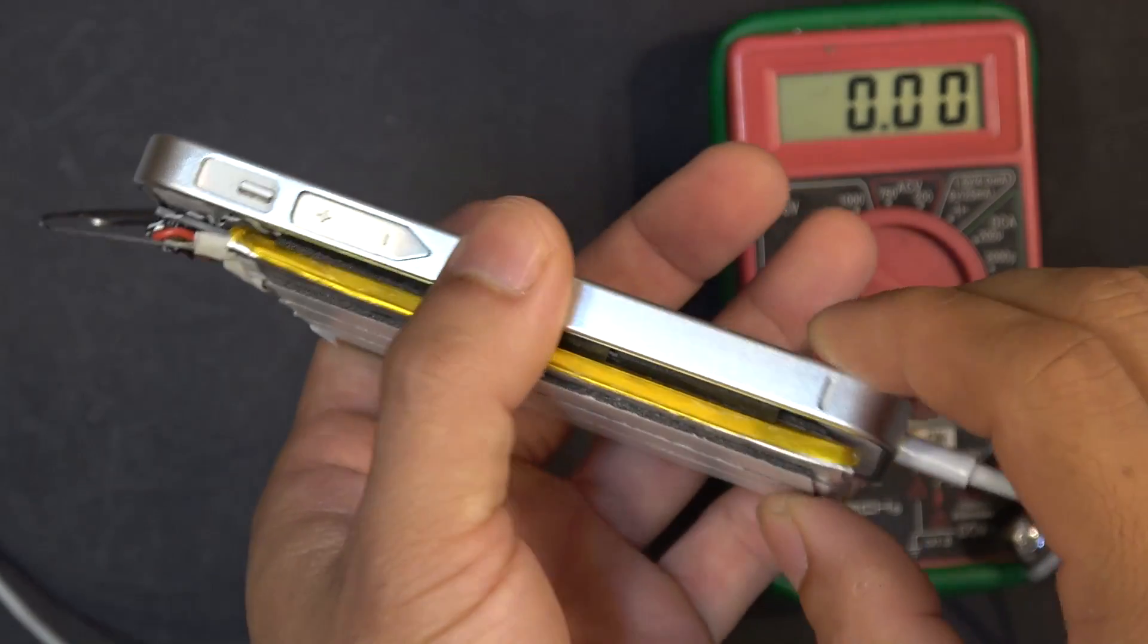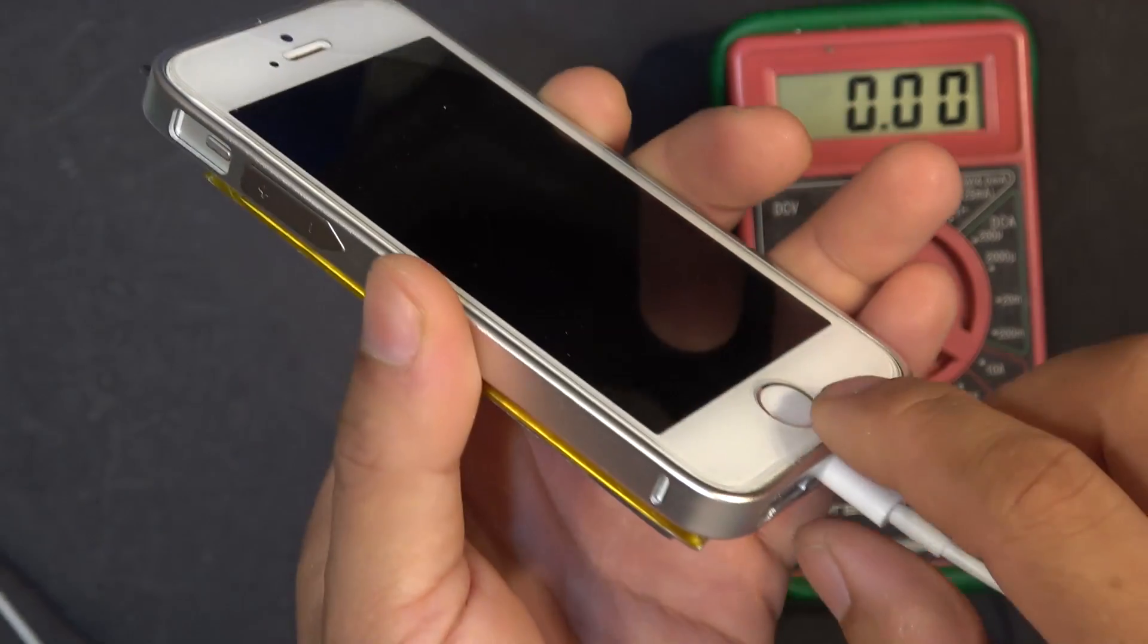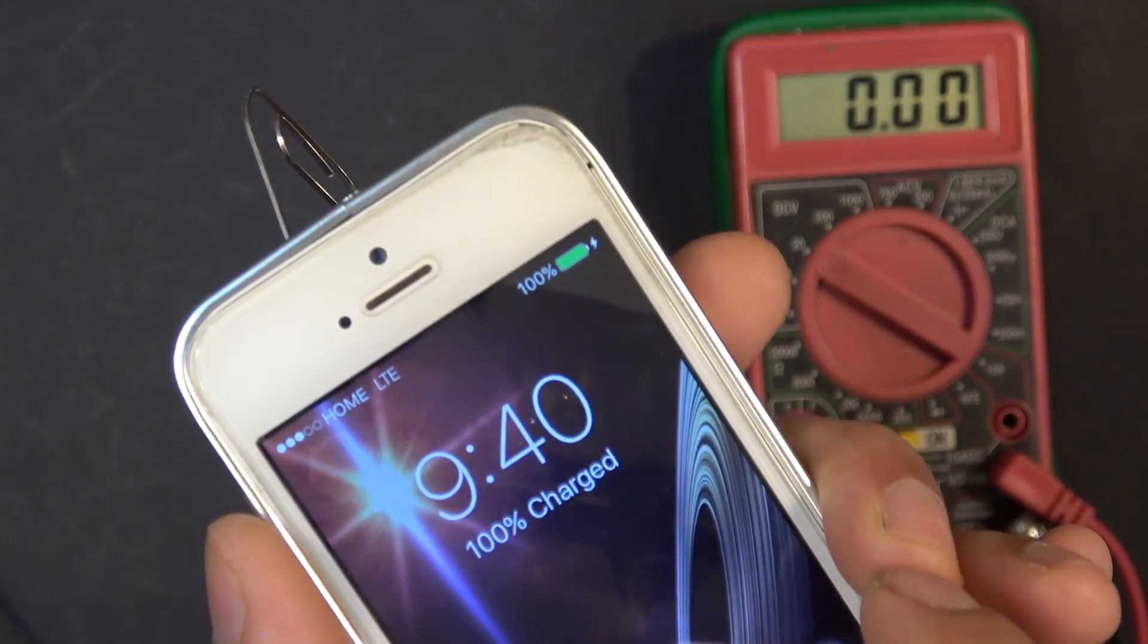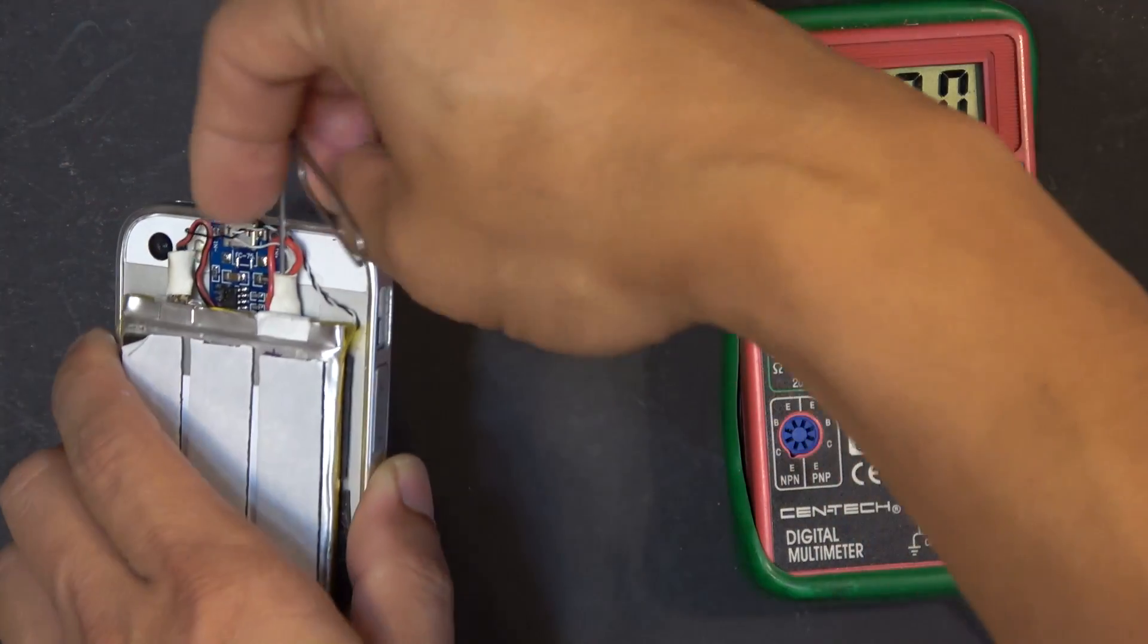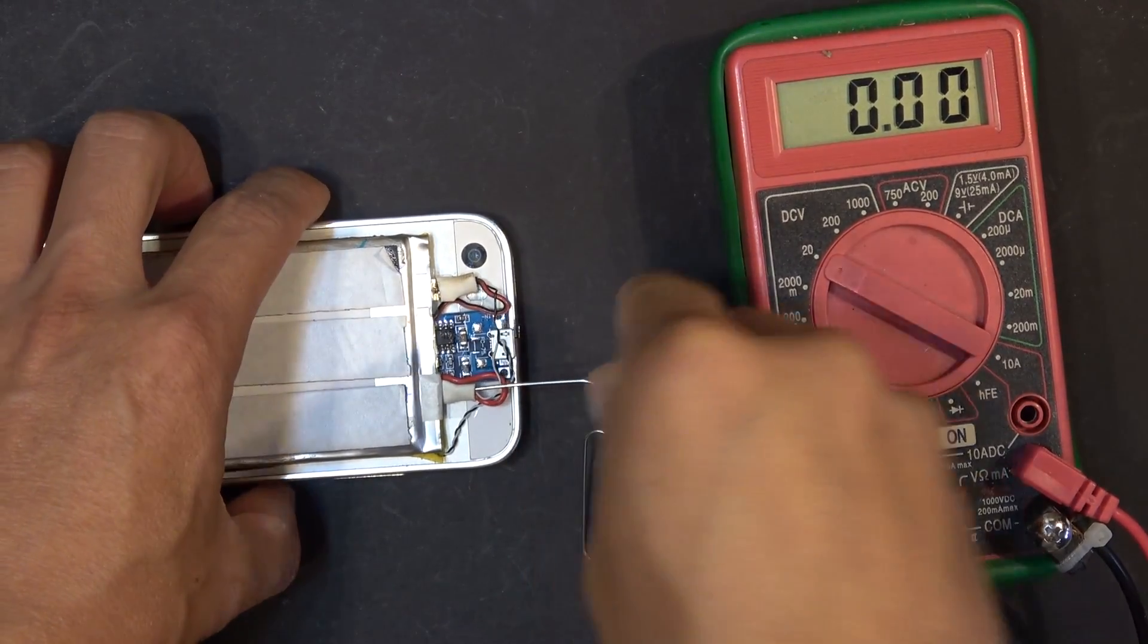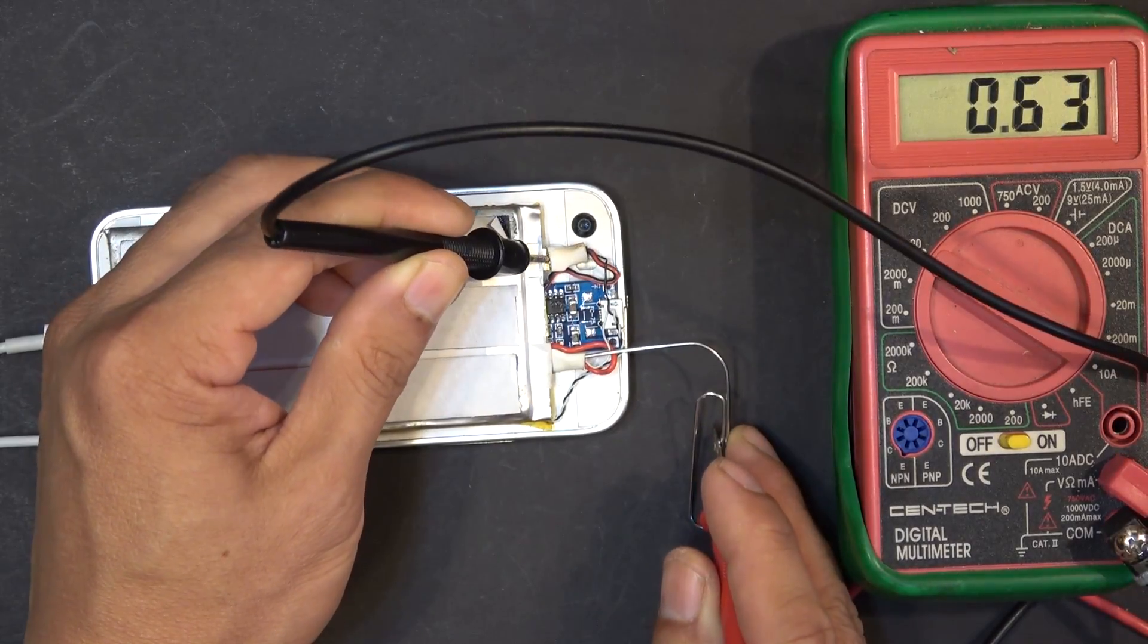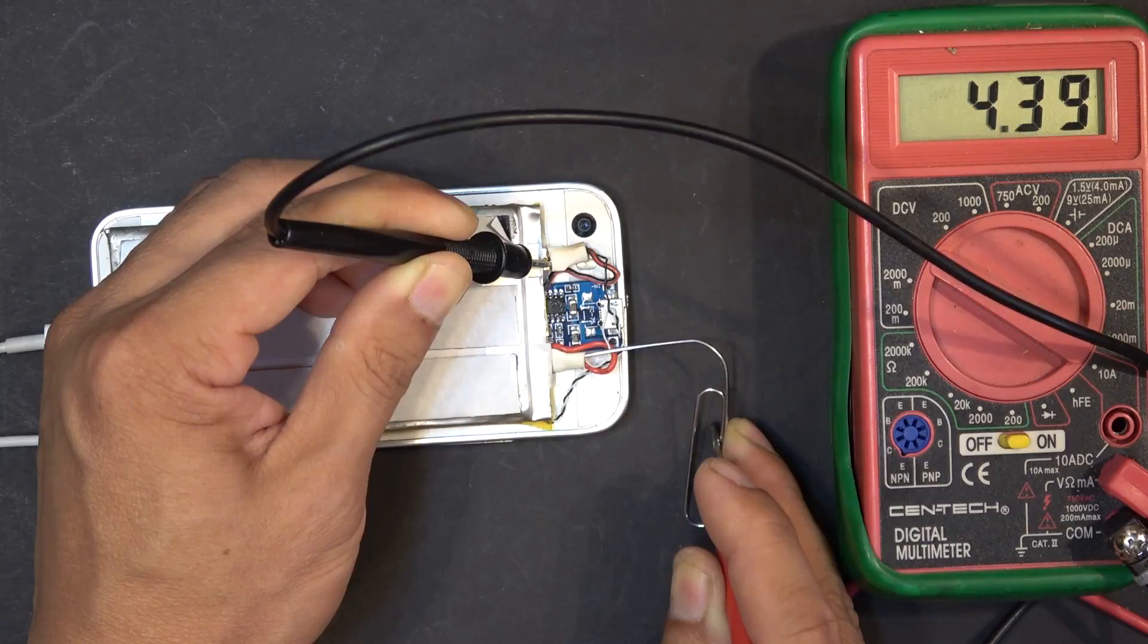So I just went ahead and replaced with a new battery. And it's currently being charged by the original iPhone charger. And the battery is currently full at 100%. Now let's check and see what voltage we have on the battery right now.